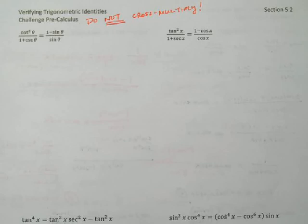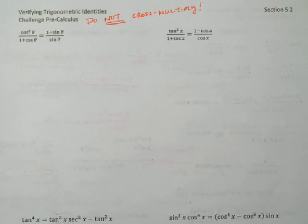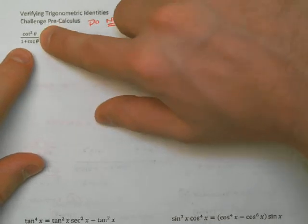Anytime you are given fractions on both sides and you're trying to decide which side should be considered the complicated side, I would always suggest picking the side that has more than one term on the bottom. This one over here I could break up into two fractions: 1 over sine and sine over sine. That simplifies quickly — 1 over sine is cosecant, sine over sine is 1, so that's cosecant theta minus 1. That's easy to do. This other one I couldn't do in one step. So I would always pick the one that has more than one term on the bottom and work with that.